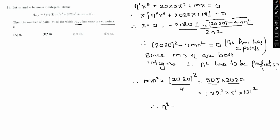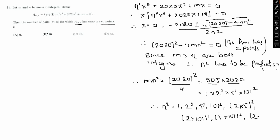So n² can be written as: 1, 2², 5², 101², 2×5², 2×101², 2×5×101², and 2×5²×101² — these are all the valid values of n².